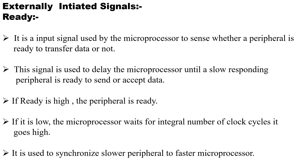To recap: peripherals are very slow, the processor is very fast. If the processor reduces its speed, its efficiency will be affected. That is why we introduced the concept of READY. READY is a pin in the microprocessor used to sense whether the peripherals are ready for the transfer or not. The microprocessor will do some work internally, and when the READY pin goes high, the processor will know that the peripherals are ready for transfer. If it is low, the processor has to wait until the peripherals get ready.